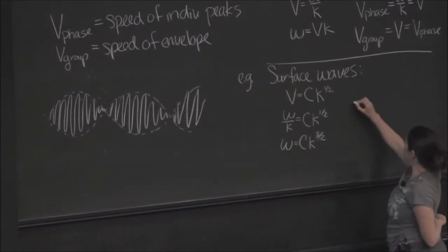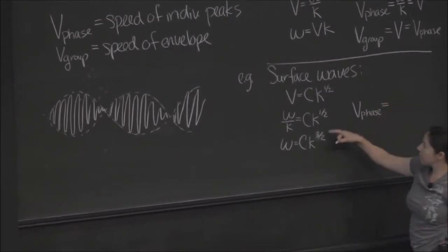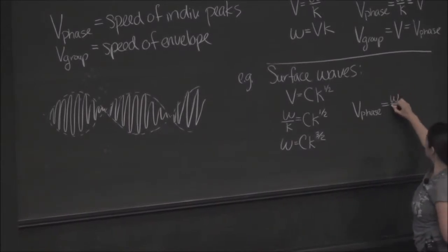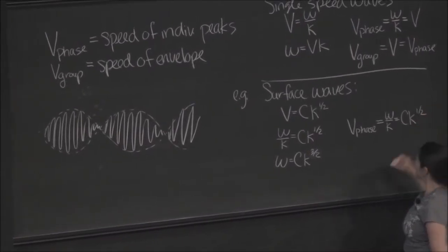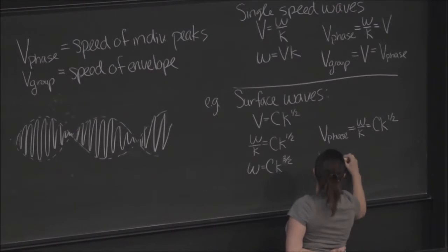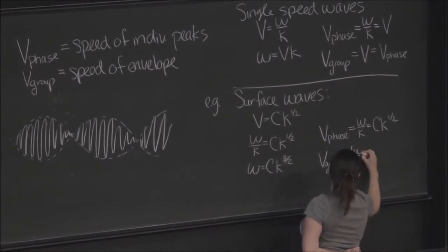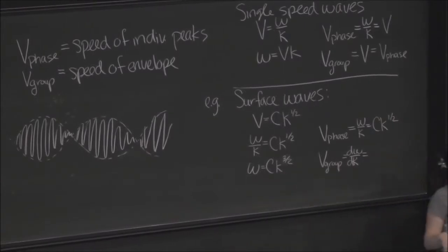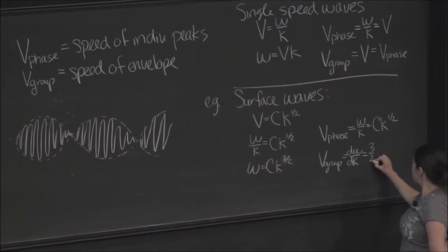So now, what's the phase velocity for this kind of wave? Omega over k, which is ck to the one-half. The group velocity, however, is d omega dk. What's the derivative of omega with respect to k? 3-half. 3-half ck to the one-half.